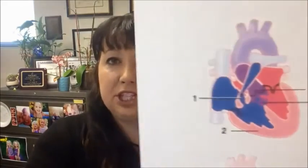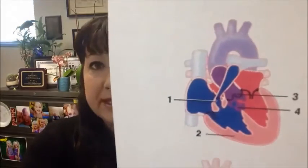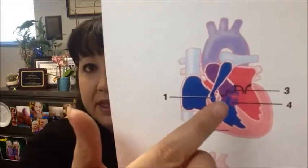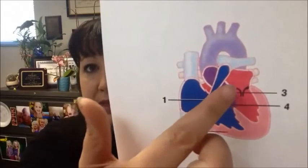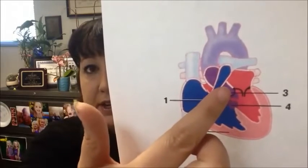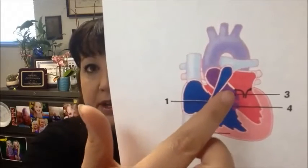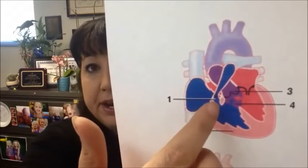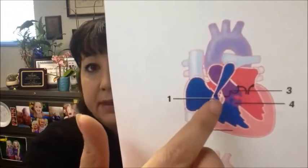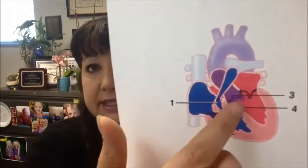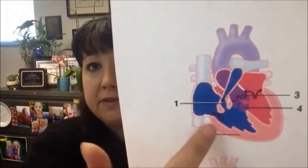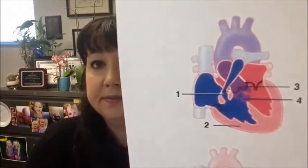Looking at the picture of tetralogy of Fallot, we can see the overriding aorta coming over, some of the pulmonary stenosis, a pretty large VSD, and the hypertrophied right ventricle.